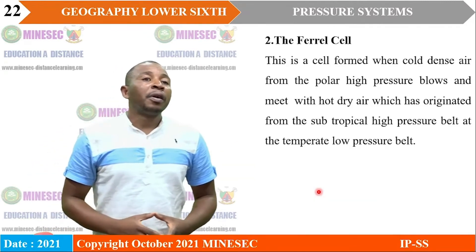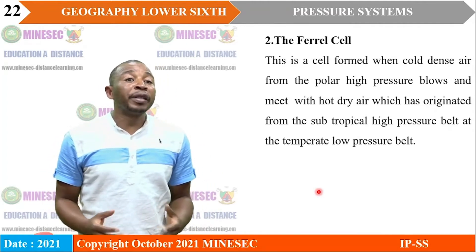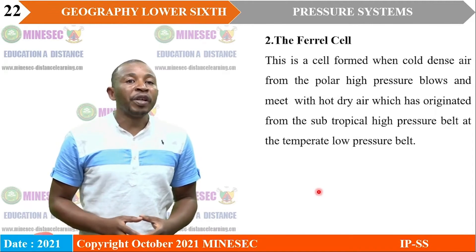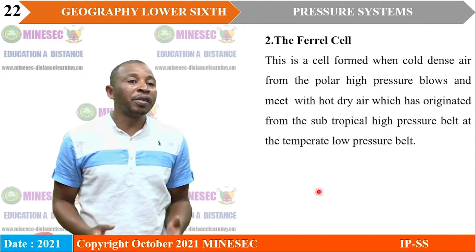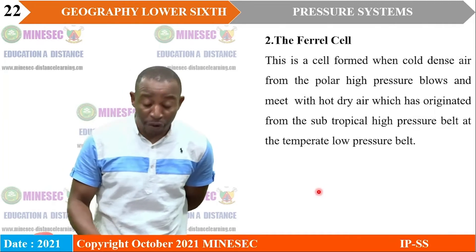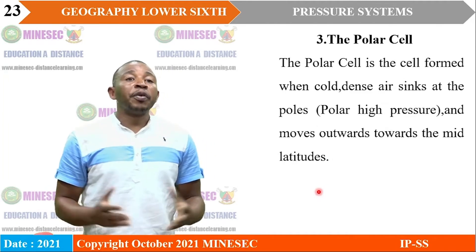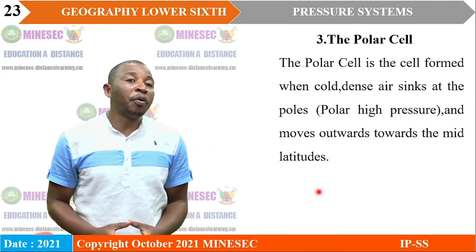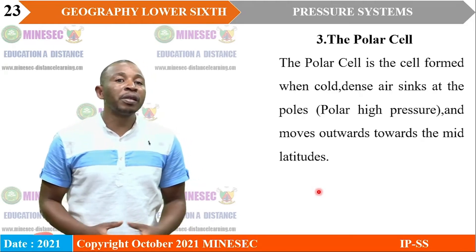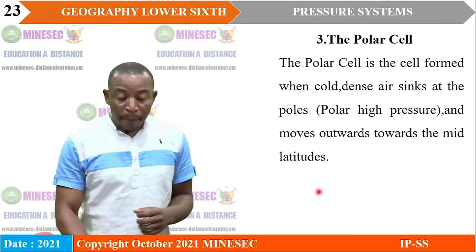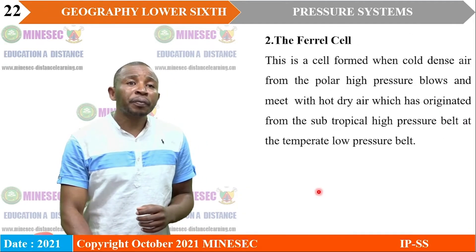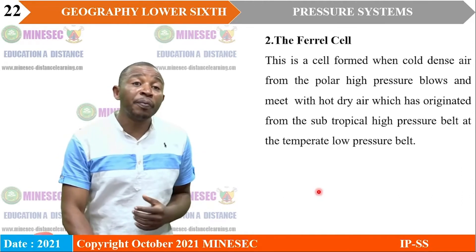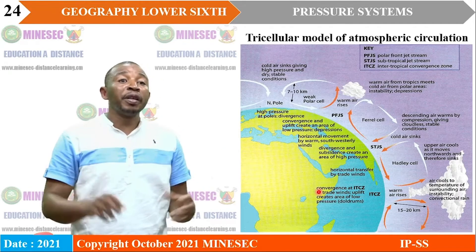The Ferrel Cell is formed when cold, dense air from the polar high-pressure belt meets dry air originating from the subtropical high-pressure belt at the temperate low-pressure belt. The Polar Cell is formed when cold, dense air sinks at the poles — the polar high-pressure belt — and then moves toward the mid-latitudes. Emphasis is placed on the Hadley Cell because it directly affects us within the tropics.